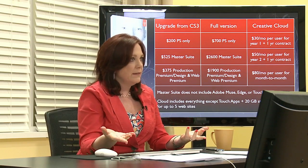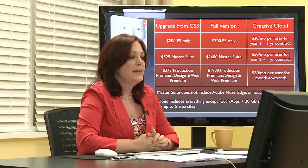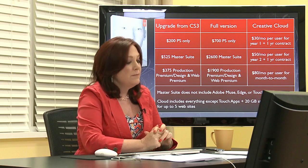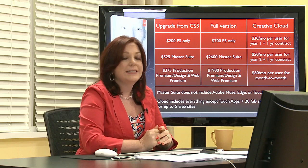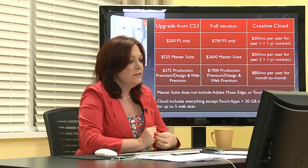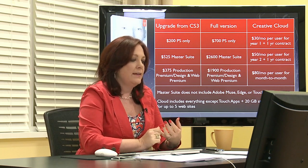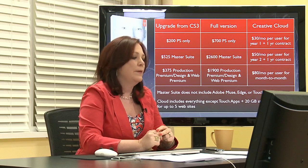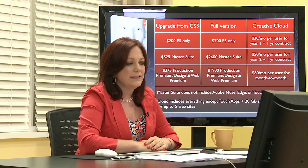The Master Suite upgrade is $525, and the full price is $2,600, which includes everything except Muse and Edge. Adobe also bundles software in slightly discounted packages — the Production Premium and Design and Web Premium are $375 for an upgrade or $1,900 at full price, and those include most everything except Muse and Edge. You'd need to check those packages online to see exactly what they include.